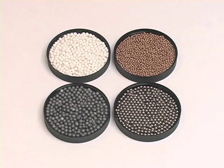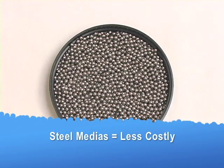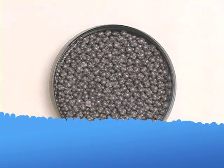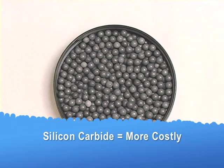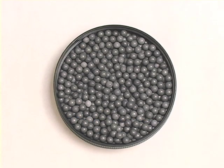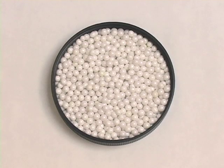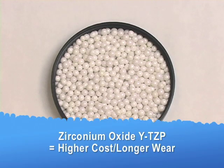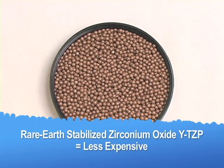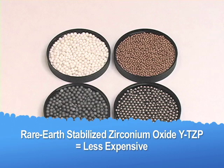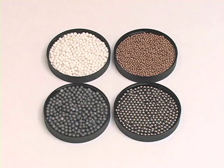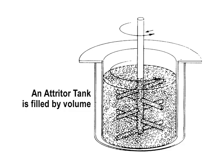Cost is always a consideration in choosing grinding media, although certain applications require certain types of media regardless of the cost. The basic steel medias such as through-hardened carbon steel or chrome steel are relatively inexpensive, while a specialty media such as silicon carbide is much more costly. Even within a similar type of media group, there can be wide differences in cost. For instance, zirconium oxide YTZP is much more expensive than the rare earth stabilized zirconium oxide media, but it has a much longer wear life. Keep in mind that a dense media requires much more media, as an attritor tank is filled by volume.